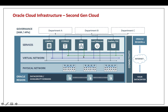On top of the VCN sits the services layer. All compute resources are made available as services — database services, object storage services, compute services. These are the kinds of services delivered to end users, and they are all built on top of the VCN. Once you've chosen your network configuration, all these services are deployed on top of it.